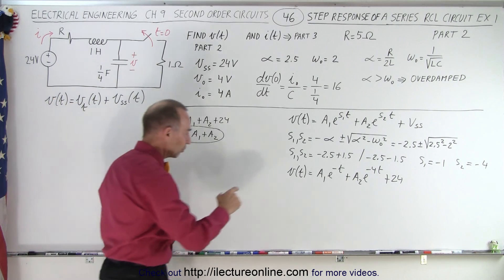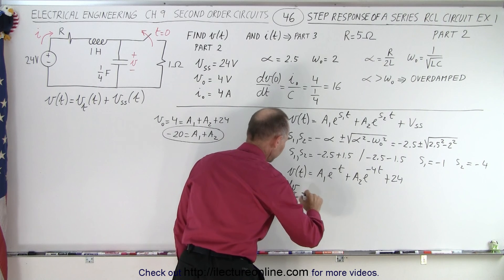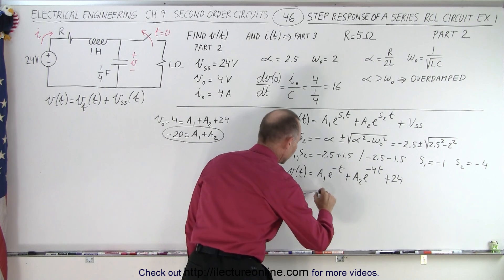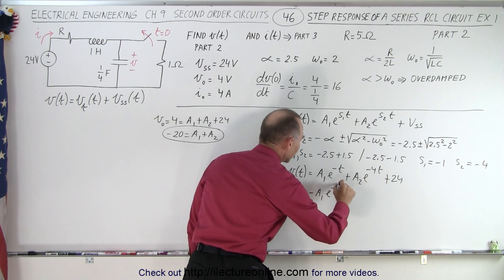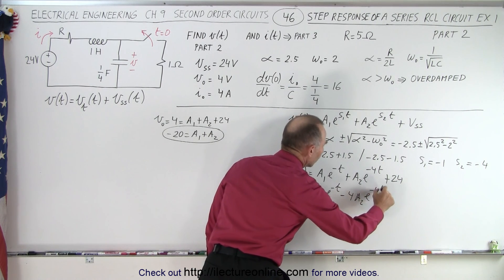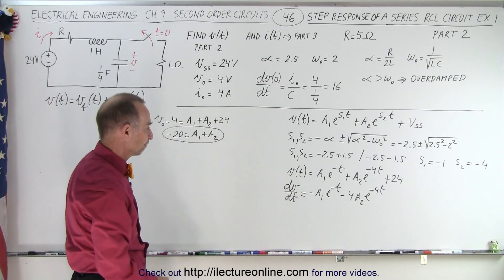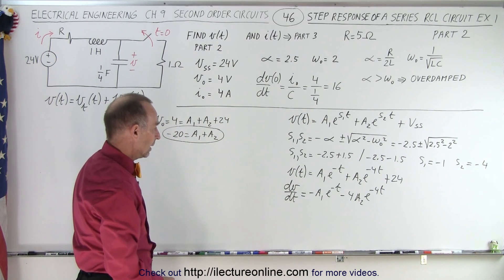So to do that, we're going to take the derivative of this, so dV/dt is equal to minus A1 E to the minus T minus 4A2 E to the minus 4T, and the derivative of 24, of course, is equal to 0.